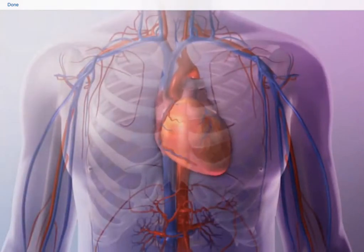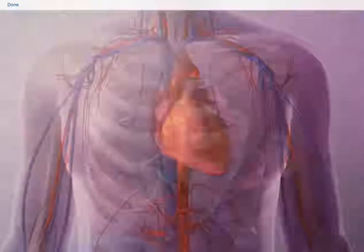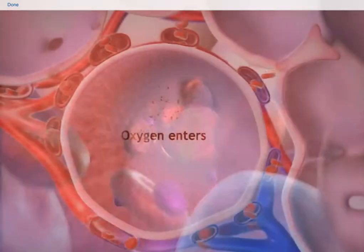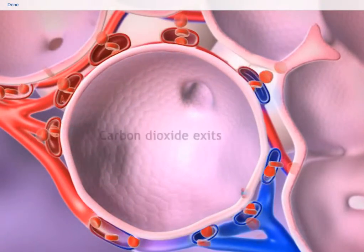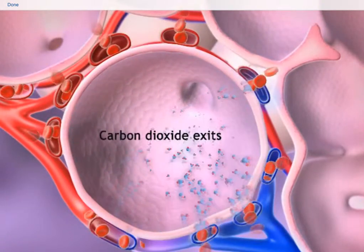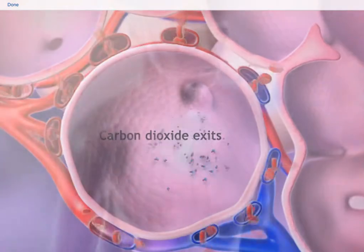Circulating blood supplies cells throughout the body with oxygen and removes waste carbon dioxide. Oxygen is absorbed into the bloodstream through tiny air sacs in the lungs called alveoli. As oxygen diffuses in, carbon dioxide moves out and is exhaled.